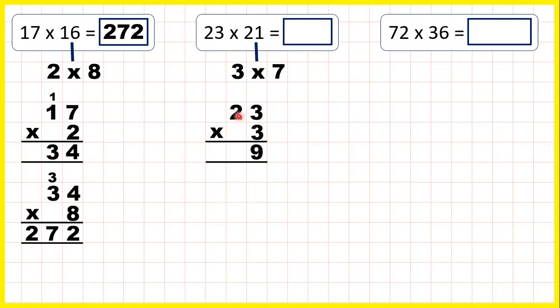Now, 3 times 3 is 9. 2 times 3 is 6. So we can take that 69 and multiply it by 7.